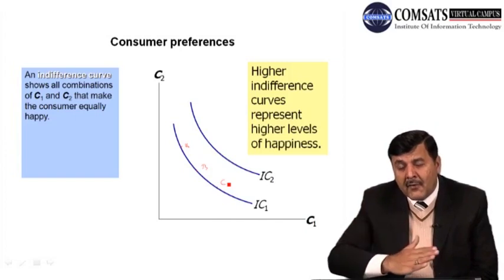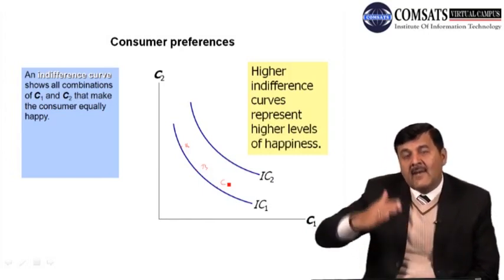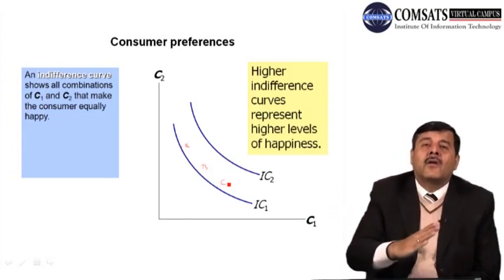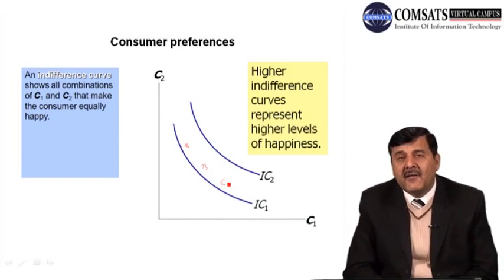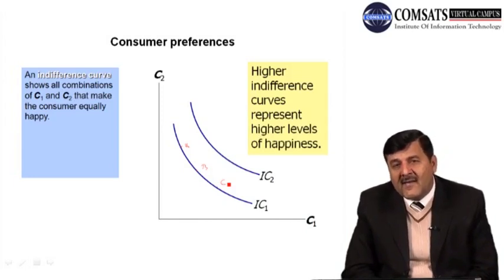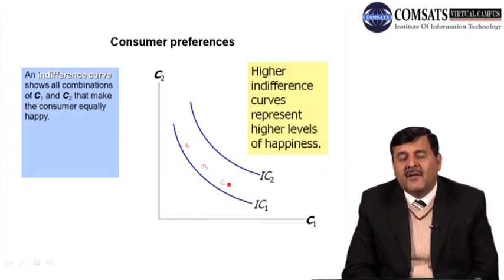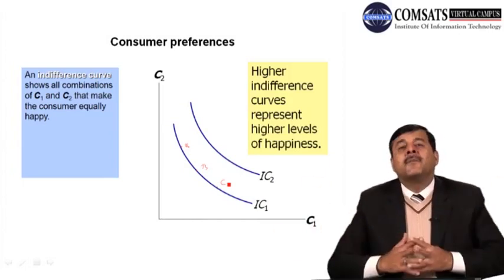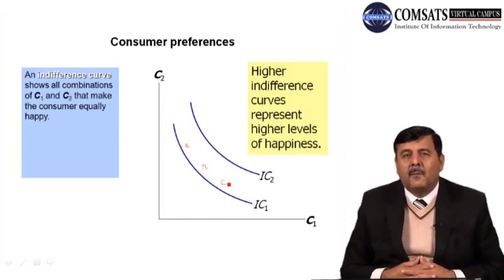As the consumer moves from a lower to a higher indifference curve, they get higher satisfaction because each point on a higher indifference curve gives more consumption in both periods C1 and C2. Higher indifference curves are preferred and represent higher levels of happiness. A consumer on a lower indifference curve gets less consumption in both time periods.